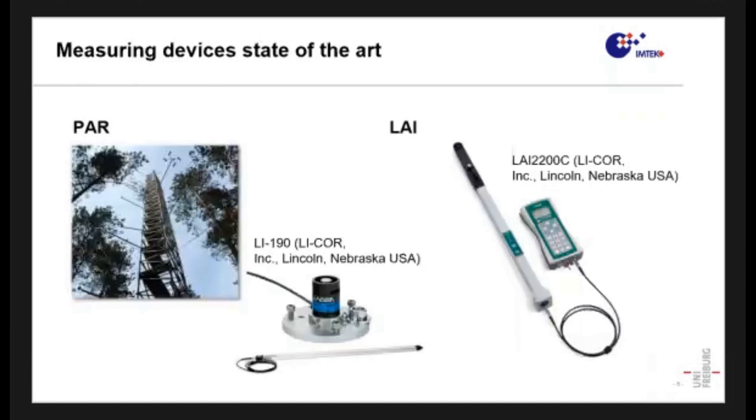There are already available systems on the market which are able to measure photosynthetic active radiation and leaf area index. But as you can see from the picture for photosynthetic active radiation, the systems are most of the time very big and placed on towers, which means that we can do a punctual measurement but not over extensive areas. There are also more compact systems like this one here, which is however not meant for low power application, which means that we cannot deploy it for a very long time.